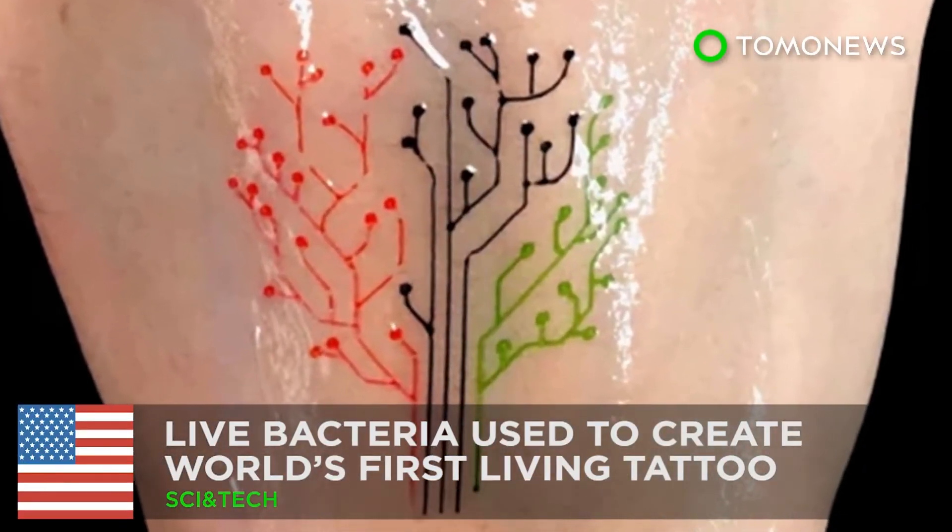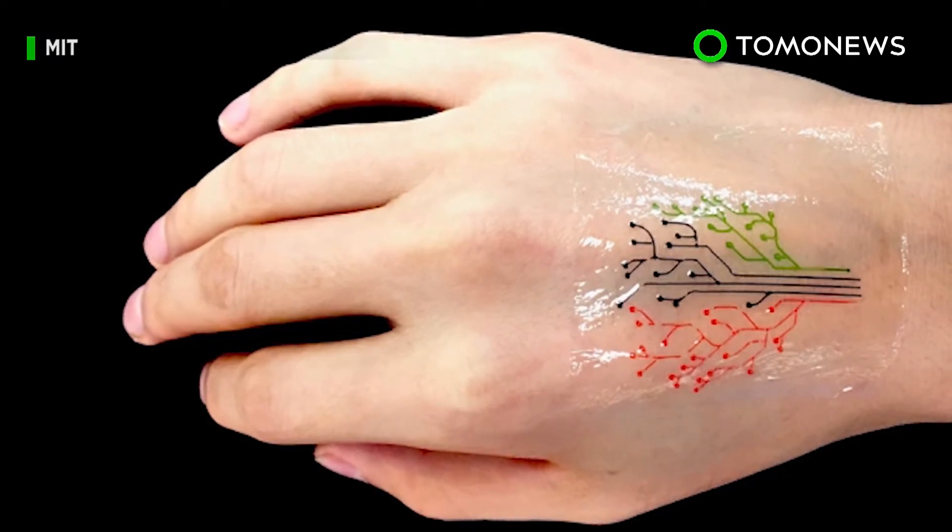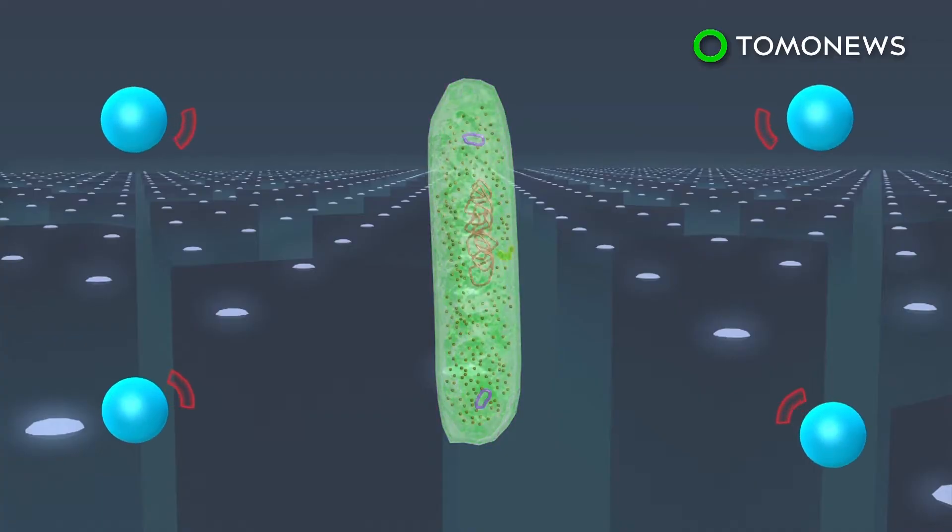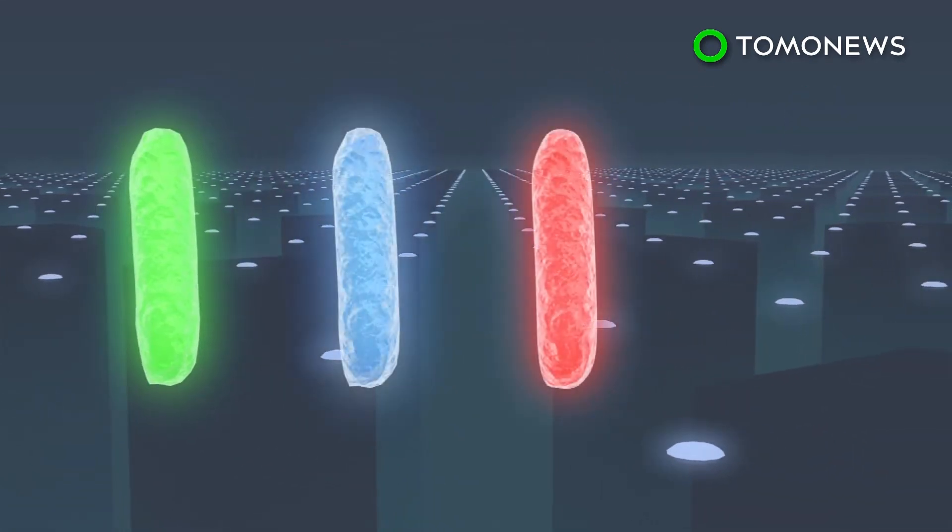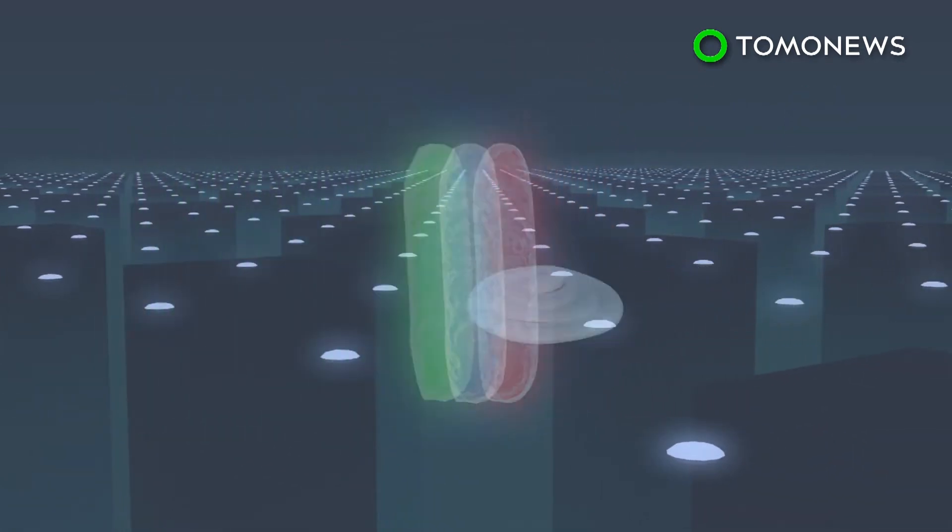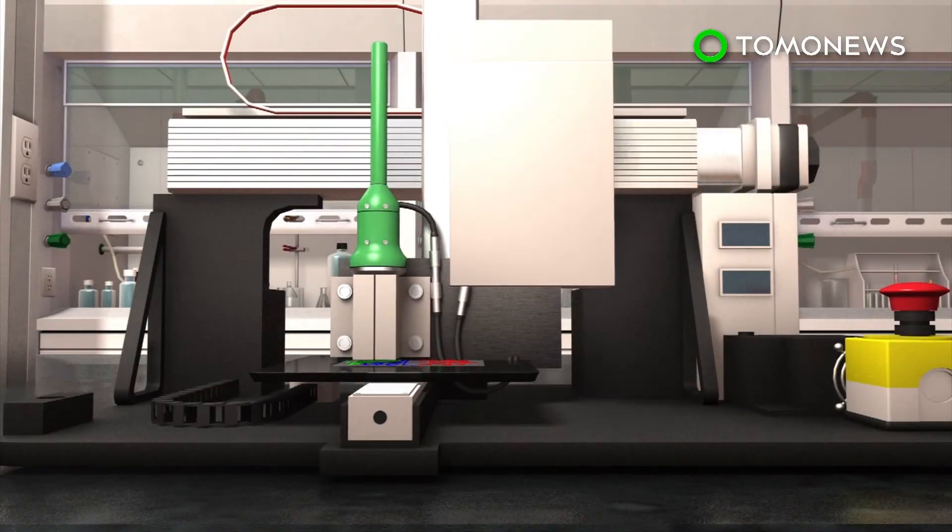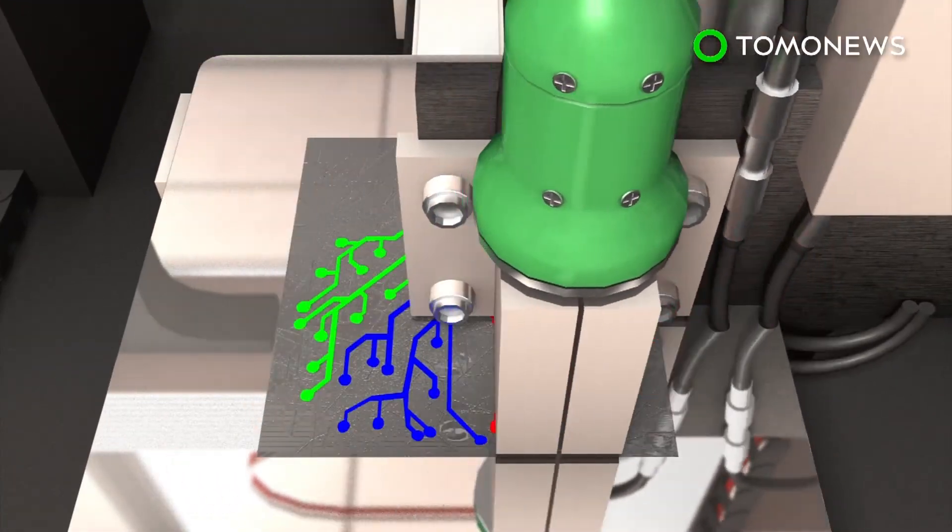It's alive! A team at MIT have successfully created the world's first living tattoo, using ink made from live bacteria. Engineers programmed bacterial cells to light up in response to different chemicals, then mixed them with hydrogel and cell-feeding nutrients to form a bio-ink. A custom 3D printer was used to print out layers of ink on a transparent elastomer patch, creating a tattoo in the shape of a tree.